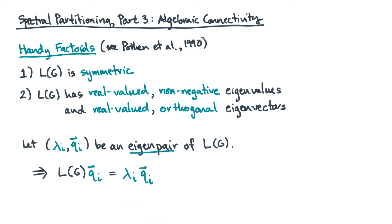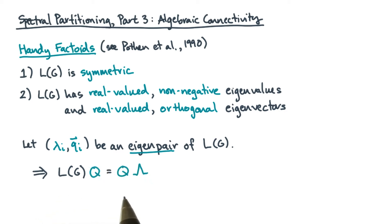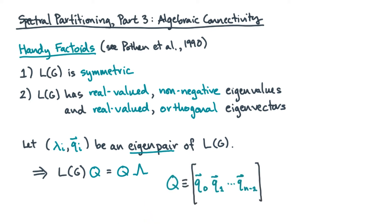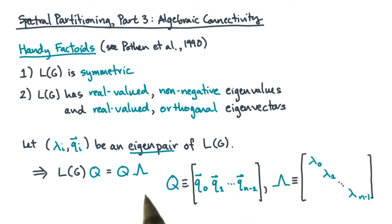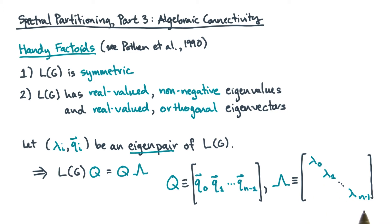You can also write this differently in matrix form: L(g) times q is equal to q times lambda, where q and lambda are matrices. In particular, the columns of q are the eigenvectors of L(g), and lambda is a diagonal matrix where all the eigenvalues sit on the diagonal.